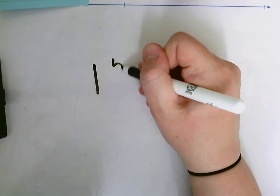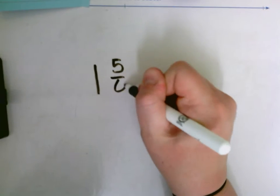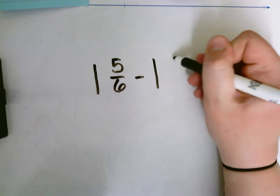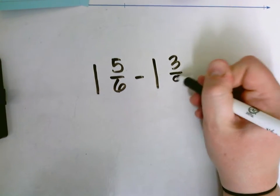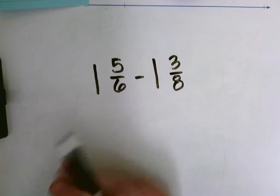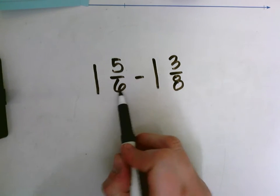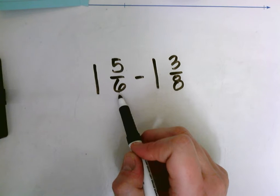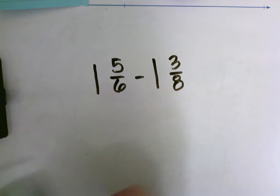I have one and five sixths minus one and three eighths. So I have some mixed numbers here. And remember, when we're dealing with mixed numbers, first we're going to just look at the fraction and see what we can round that to, and then we'll rewrite it as a mixed number again. So five sixths...